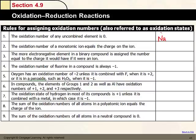Sodium by itself has an oxidation number of zero. We write the oxidation state above the element. Chlorine has an oxidation number of zero, and ozone (O₃) also has an oxidation number of zero. If these species are charged — sodium ion, chloride ion, or oxide ion — then the oxidation number equals the charge.